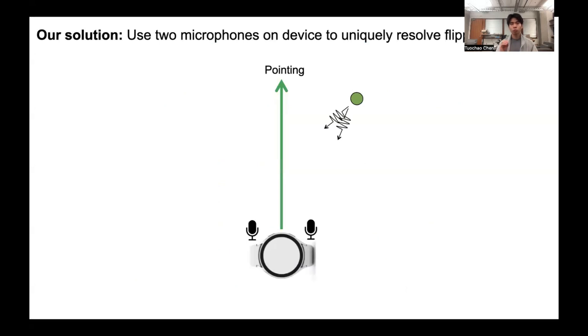To resolve this, we leverage two microphones which are common in current smart devices. At a high level, if the diver is on the right, its signal will arrive at the right microphone earlier. But if the diver is on the left, which is the mirror image, then its signal will arrive at the left microphone earlier.